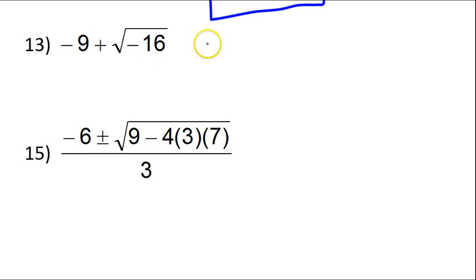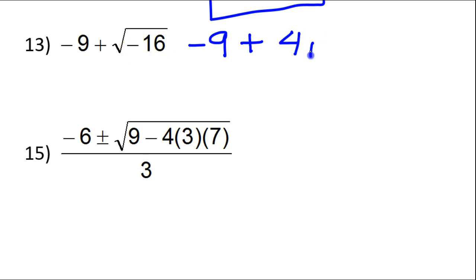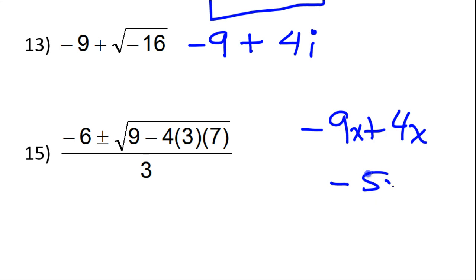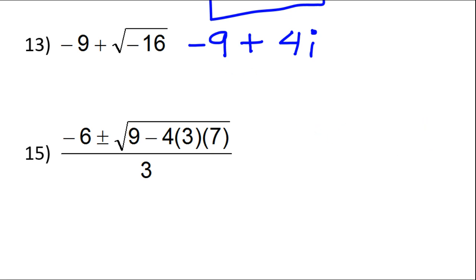Now we have this sum. Let's hang on to this negative 9 for a moment. The square root of negative 16 — well, the square root of 16 is 4. But because of the negative under there, I'm going to have i. So this is going to be negative 9 plus 4i. Now, these are not like terms — I cannot add these together. This will not make negative 5i. It's just like if I had negative 9 plus 4x — you can't put those together. So this is your final answer.